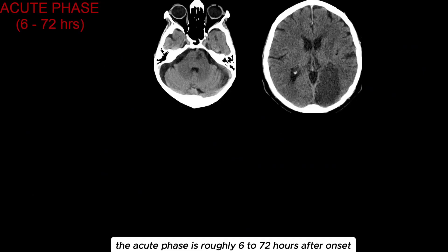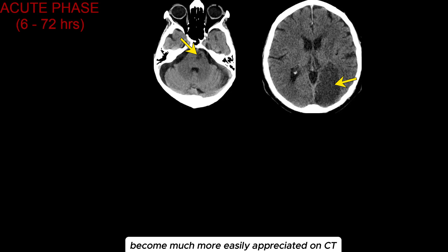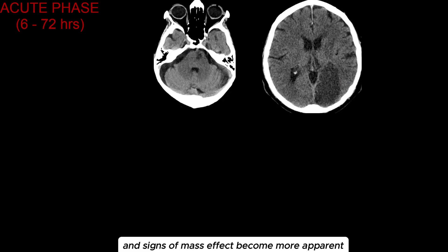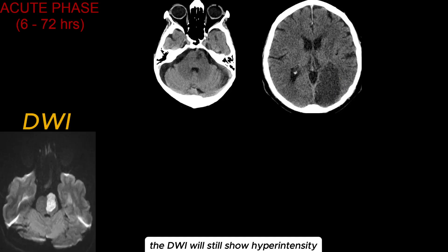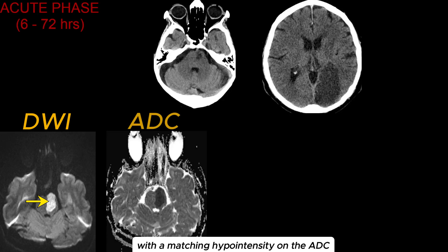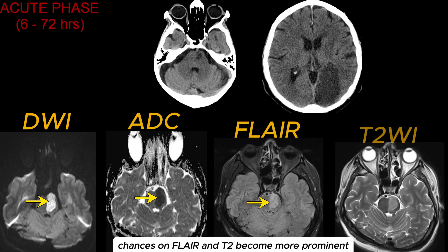The acute phase is roughly 6 to 72 hours after onset. In the acute phase, the ischemic change becomes much more easily appreciated on CT. Vasogenic edema and signs of mass effect become more apparent, with sulcal effacement. However, the mass effect usually peaks after 3 to 5 days. The DWI will still show hyperintensity with a matching hypointensity on the ADC. Changes on FLAIR and T2 become more prominent.